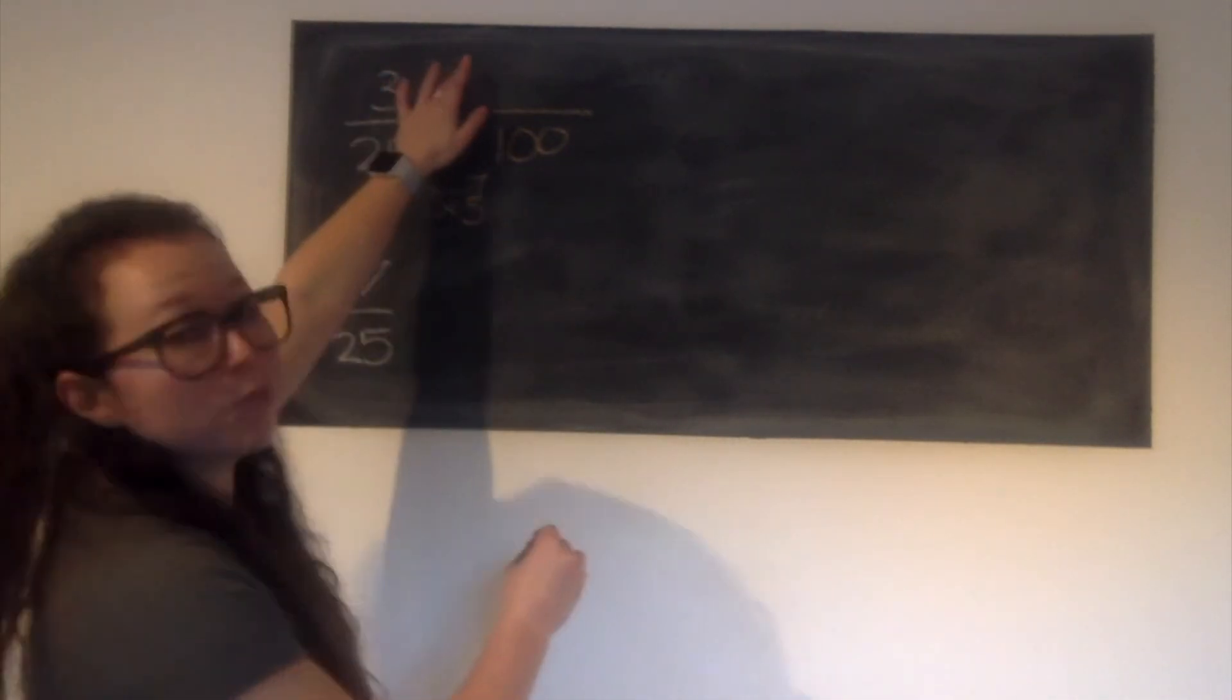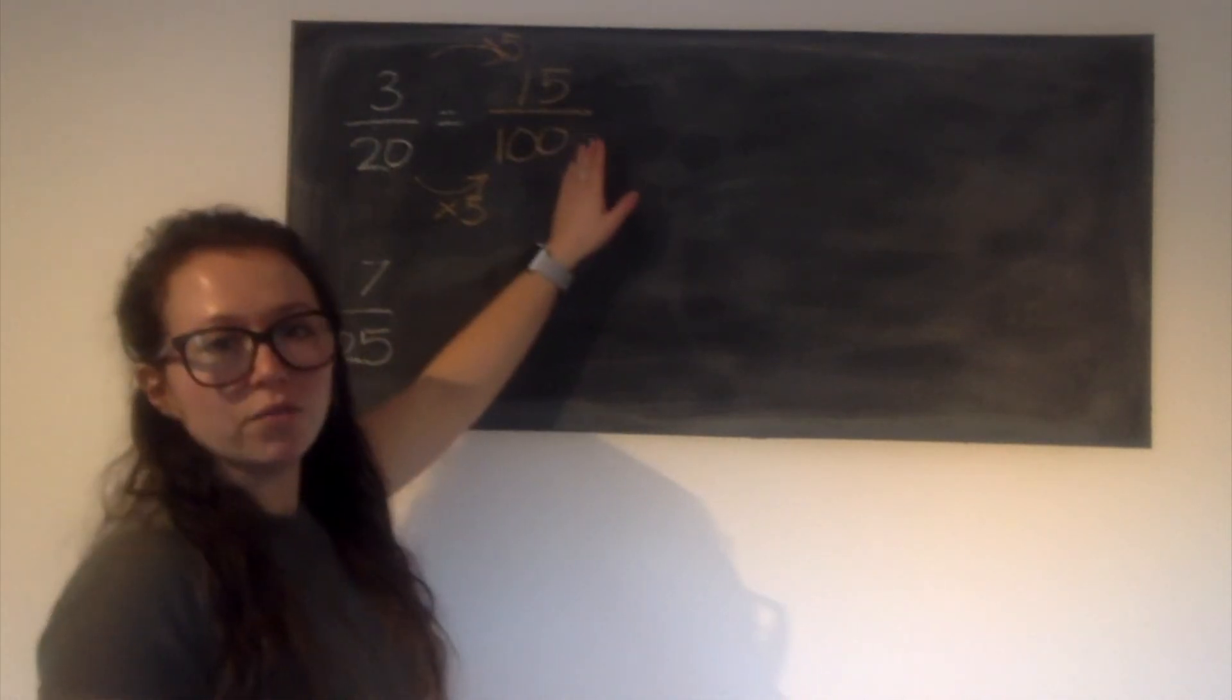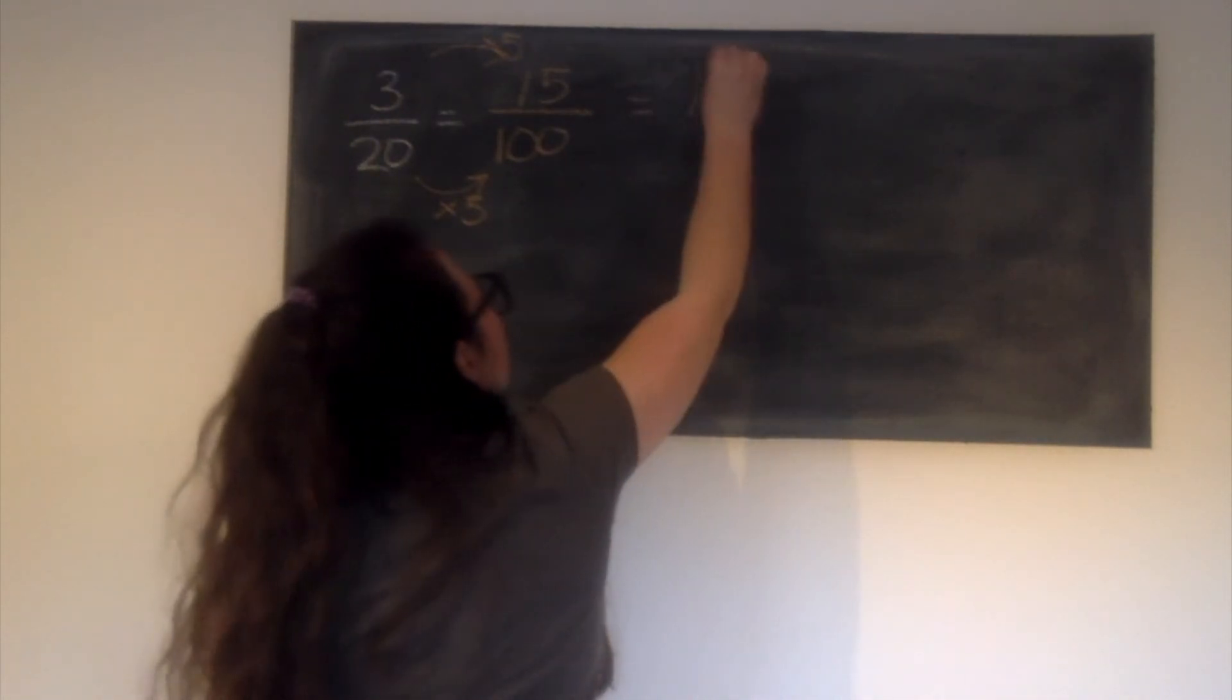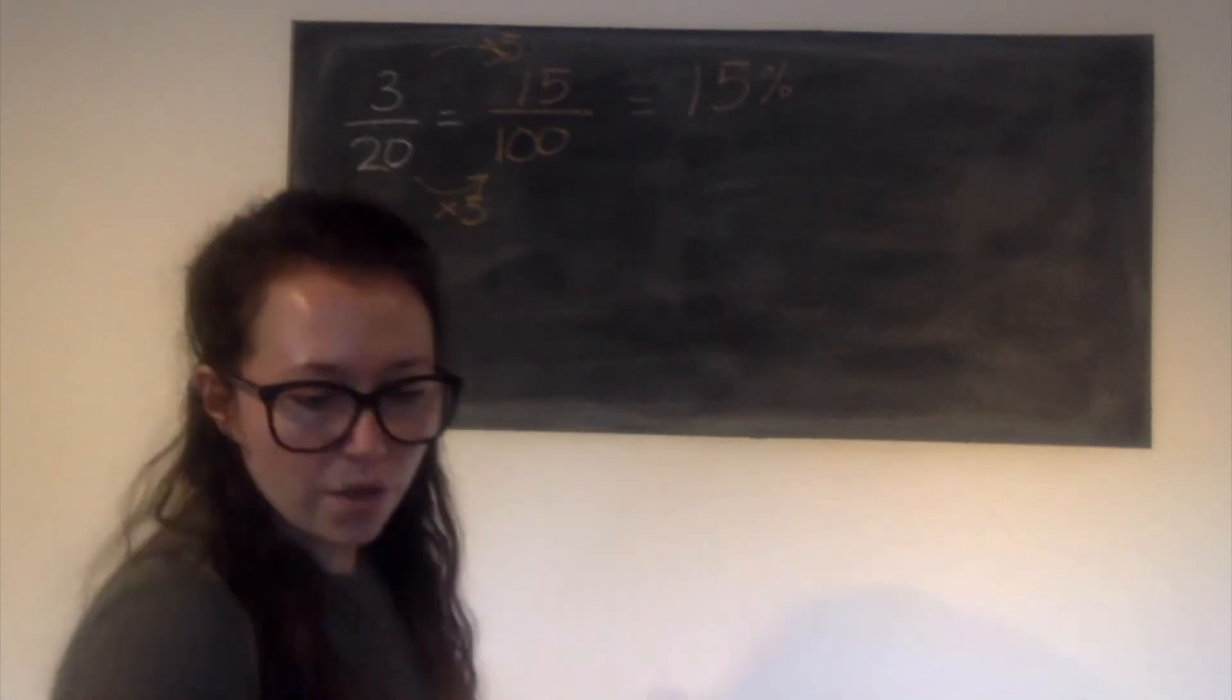Whatever I do to the denominator I must do the same to the numerator. So we times this by 5, and that gives us 15. I've now got a fraction with a denominator out of 100, so I can turn it straight into a percent, which is 15%. We'll now have a go at the next one.